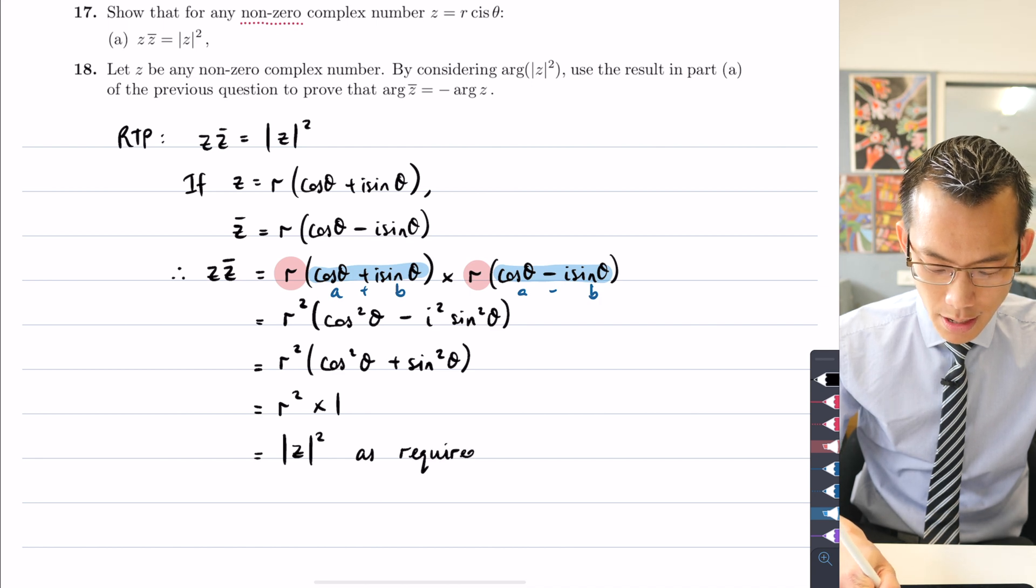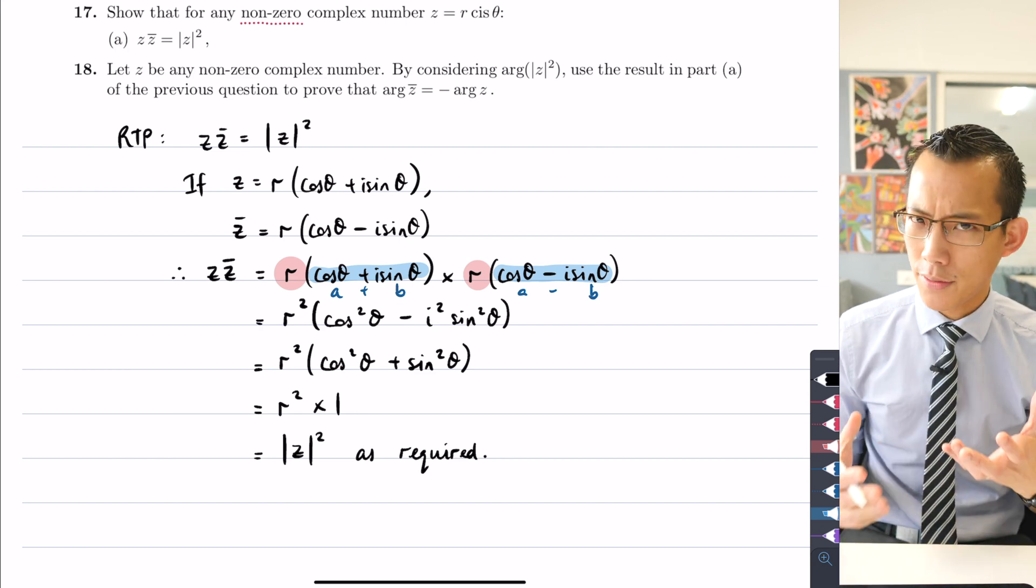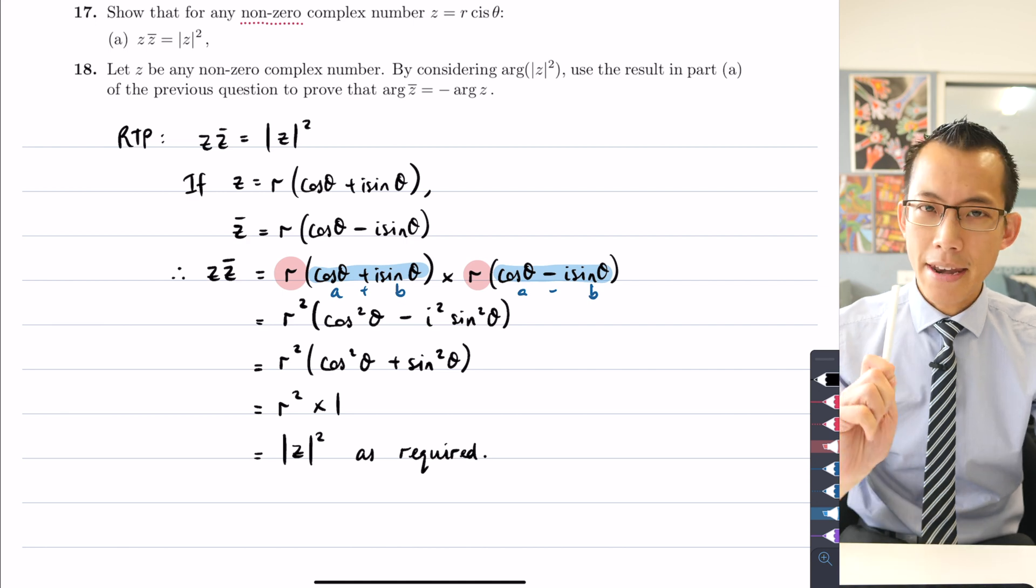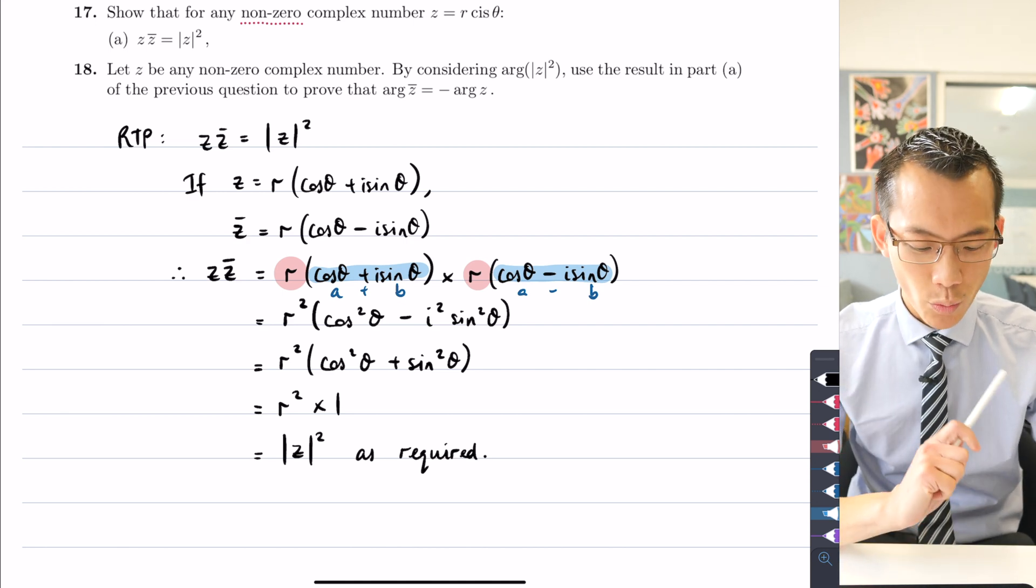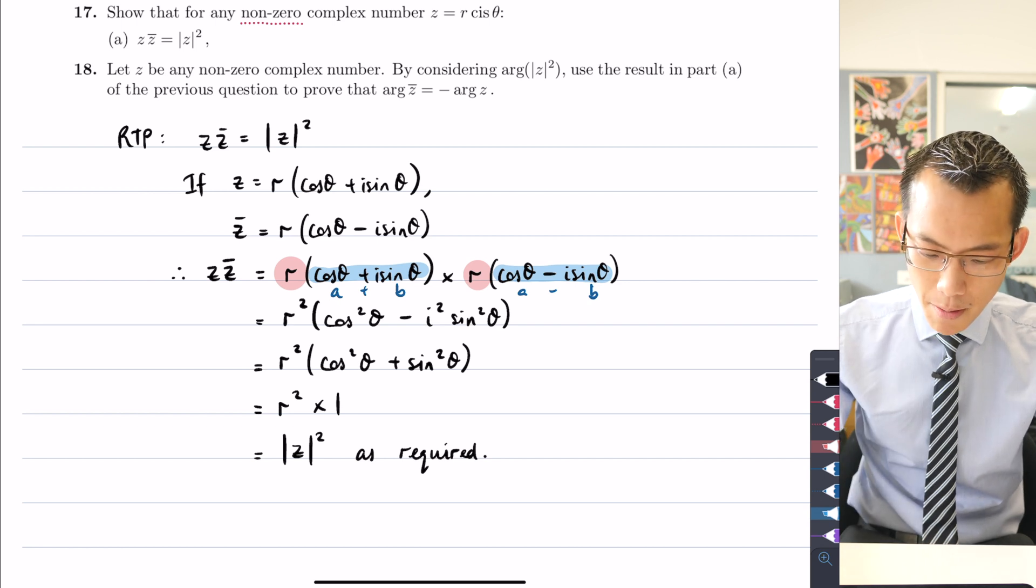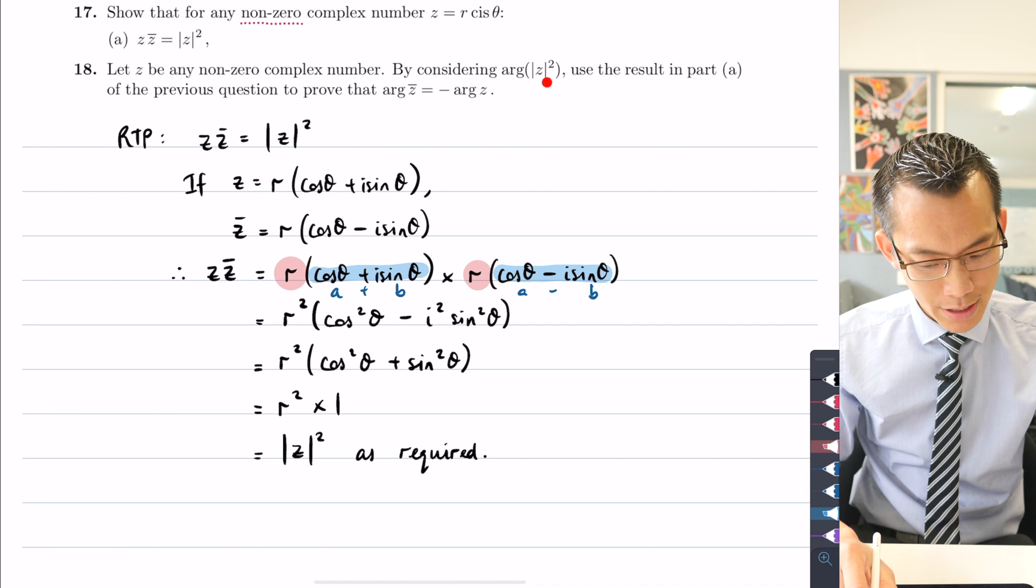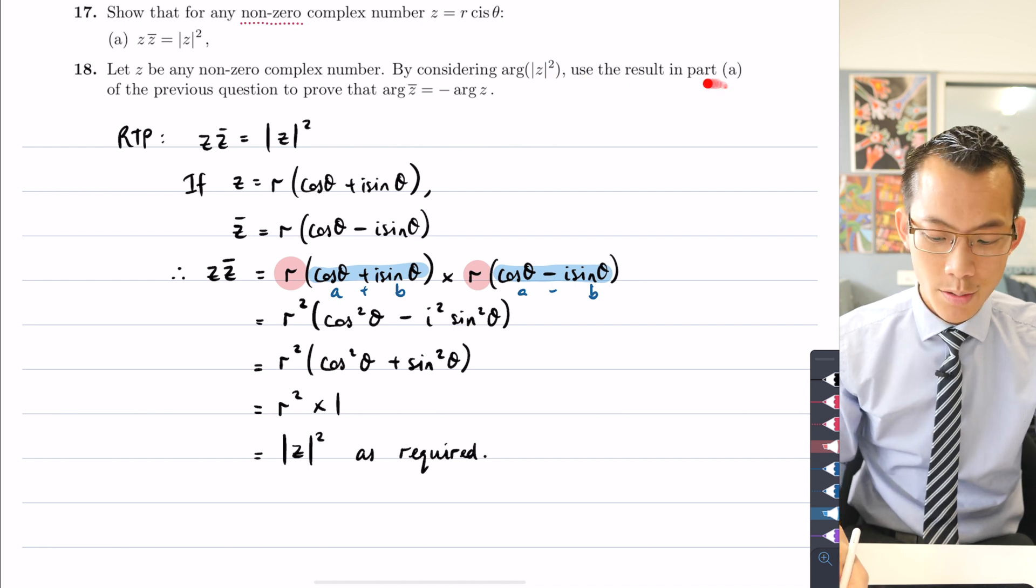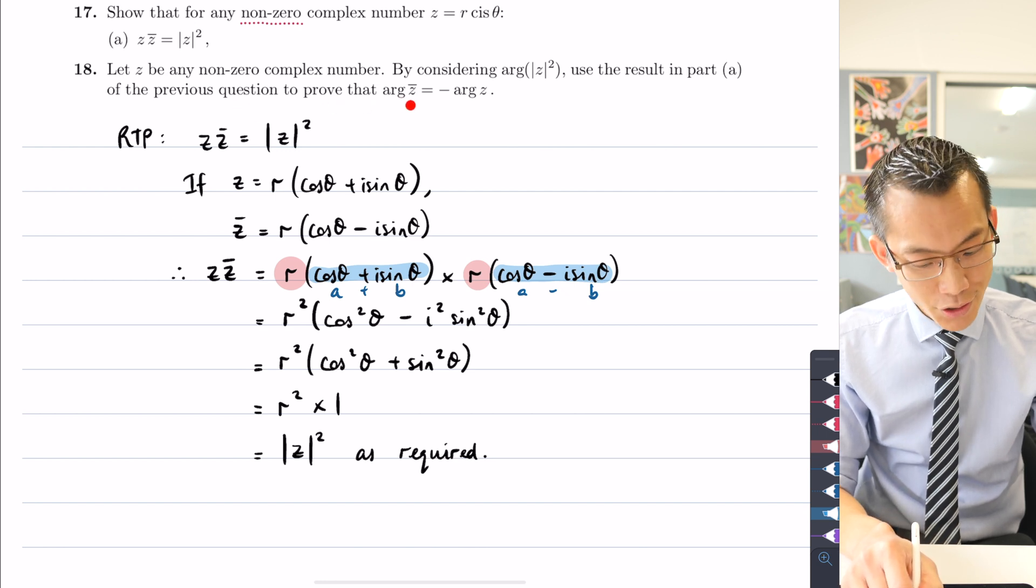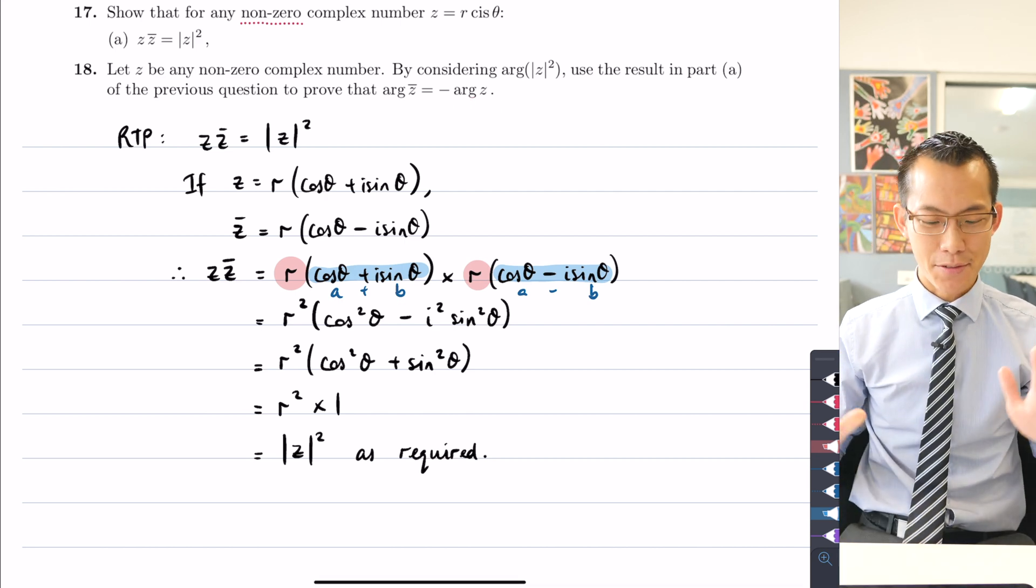So that was not too arduous. That was question 17, part A. And then question 18 says, let z, it starts off in a very similar way, let z be any non-zero complex number. And now as we read the next part of the question, we can see why they specify that this had to be non-zero. It says by considering arg of the absolute value of z or the modulus of z squared, use this result that we just proved to show that arg of the conjugate z equals minus arg z.